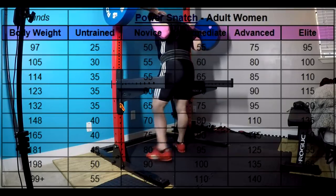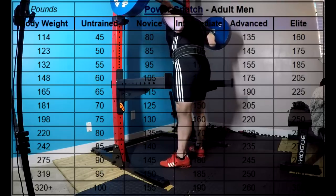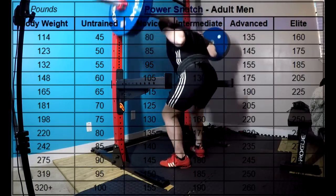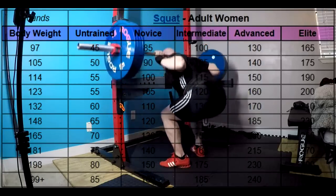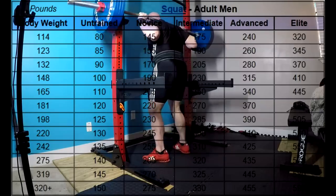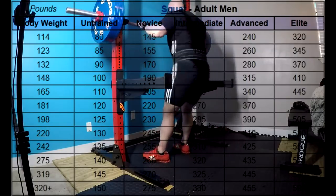Almost every powerlifter at Worlds who weighs 220 or more, with some exceptions, doesn't have a good multiplier. Like all the heavyweight guys don't have a good multiplier usually, unless they're really short. And they've used tons of drugs to put themselves way up several weight classes higher than they could ever be naturally.